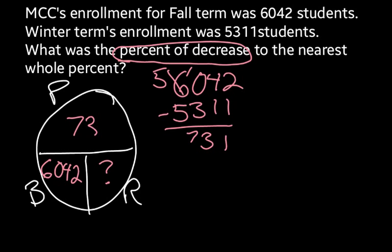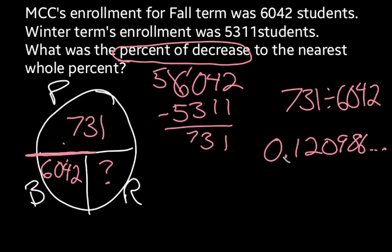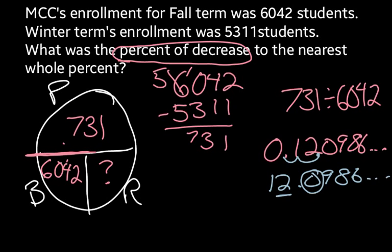That gives us 731. So the actual decrease in students is 731, which is the decrease from fall to winter. We're going to divide that by our base, because it's split by the dividing bar: 731 divided by 6,042. We get a decimal of 0.120986... Since we're rounding to the nearest whole percent, we convert to a percent by moving the decimal two places: 12.0986%. Rounding to the nearest whole percent, the digit after the ones place is zero, so we round down to 12%. There is a 12% decrease from one term to the next.